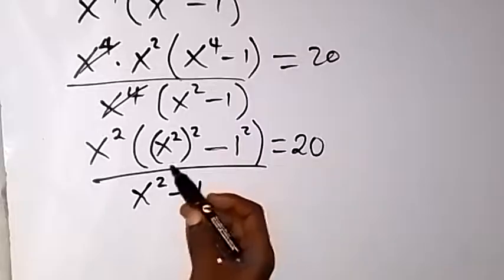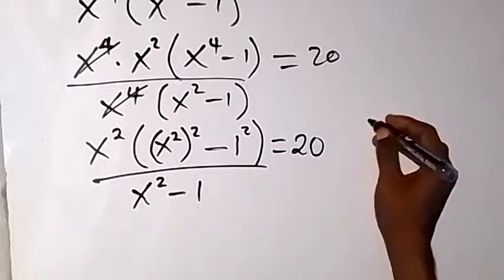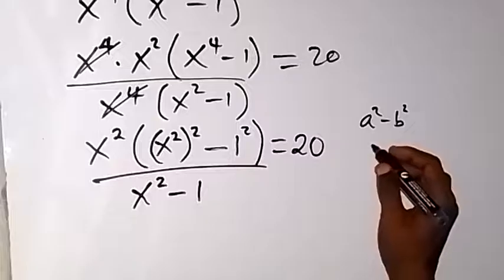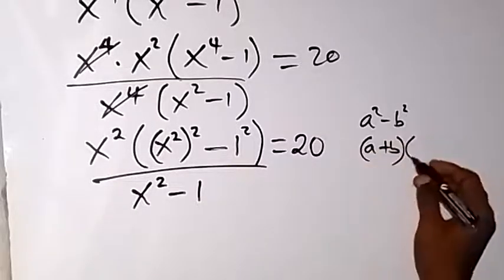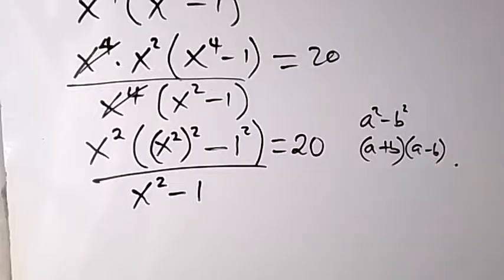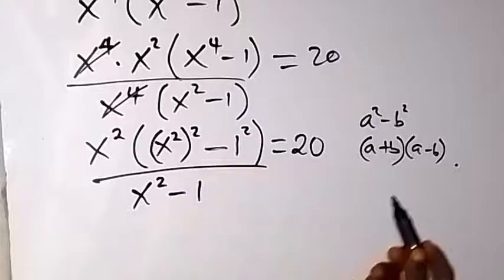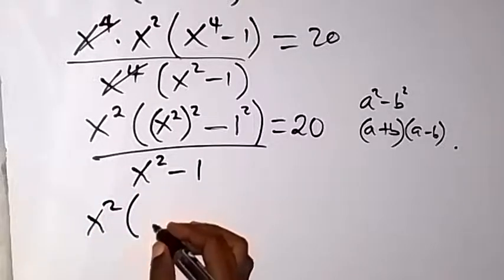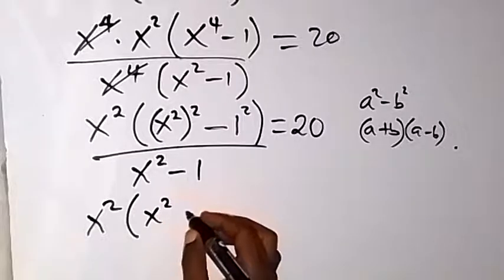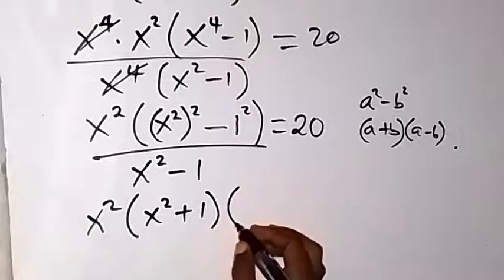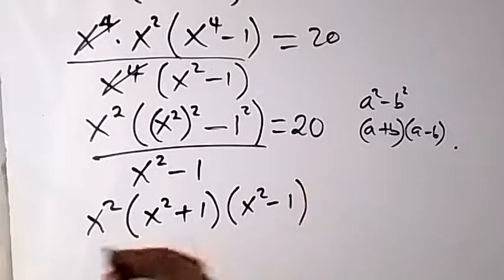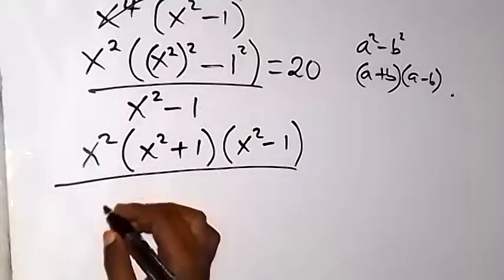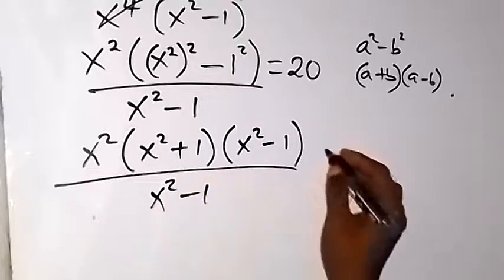We now have a difference of two squares in the form a^2 - b^2, where a = x^2 and b = 1. The expansion gives (a + b)(a - b), so (x^2)^2 - 1 becomes (x^2 + 1)(x^2 - 1). The expression becomes x^2 times (x^2 + 1)(x^2 - 1), all over (x^2 - 1), equal to 20.